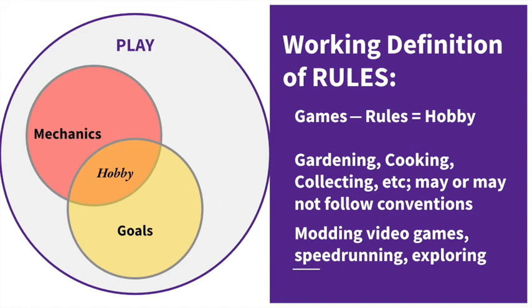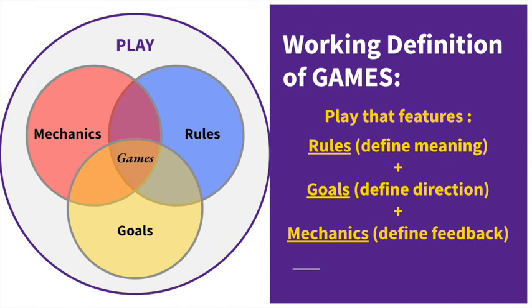I did warn you that rules and learning were tricky. I honestly don't know if we are going to get a handle on this mess by the end of the semester, but we will try — and maybe we'll come up with a better working definition between now and then. So this is our working definition of games from a learning perspective: games use rules to define meaningful patterns in play, goals to give direction and allow the game to change over time, and mechanics to form feedback loops which guide player decisions as they play.